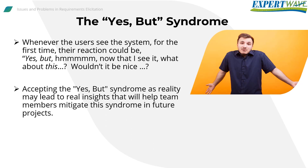Accepting the Yes But Syndrome as reality may lead to real insights that help team members mitigate this syndrome in future projects. We should plan for it and employ techniques that get the 'yes buts' out early. We should anticipate that there will be yes buts and add time and resources to plan for feedback. Software is a complex product — we shouldn't expect to get it right the first time.